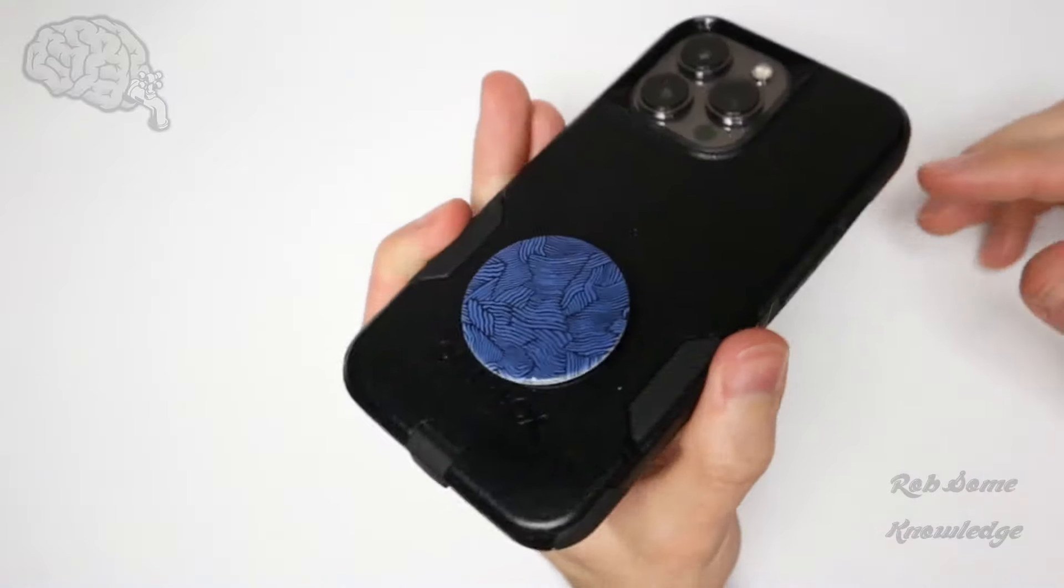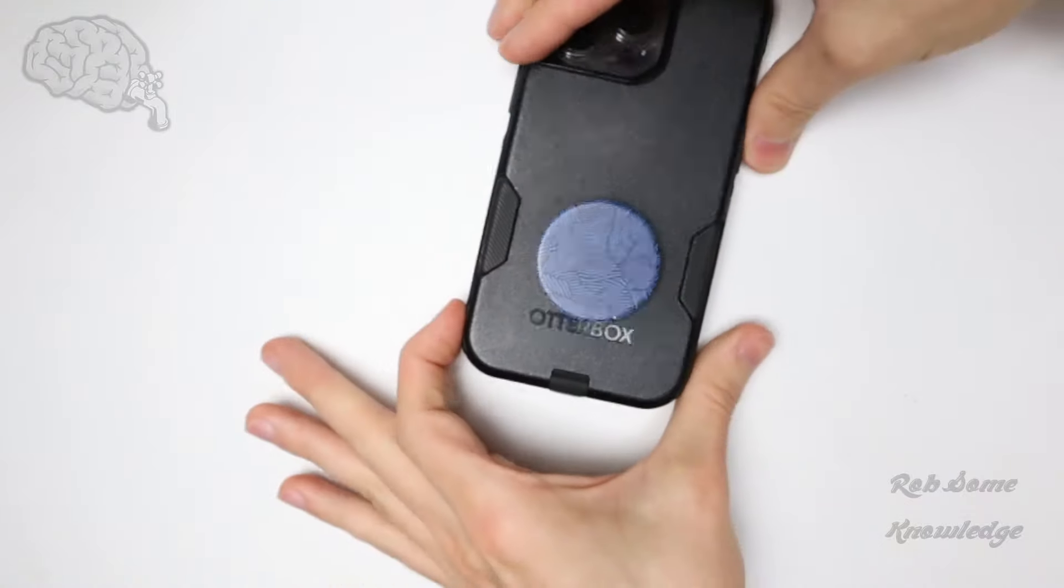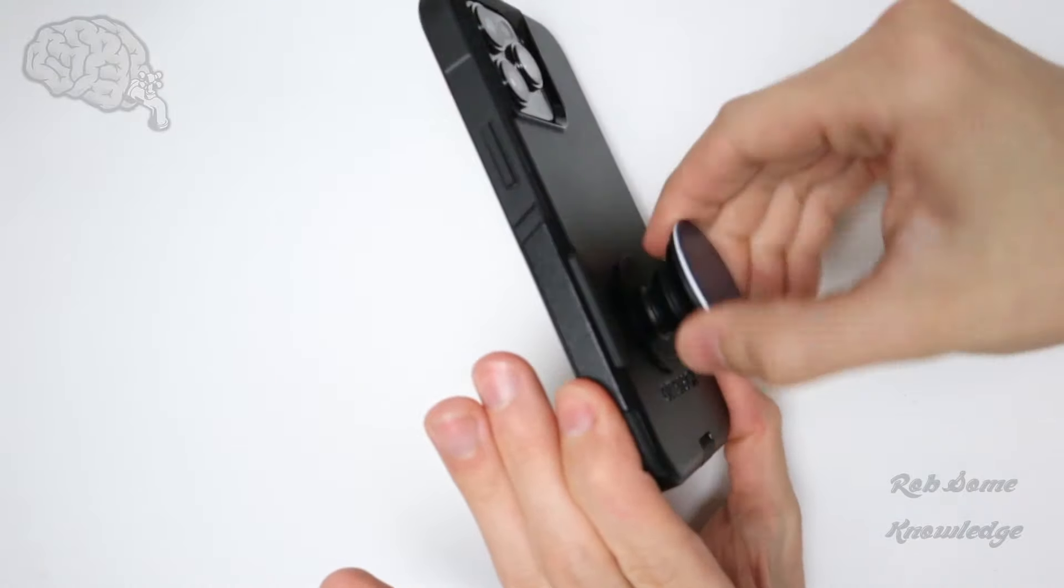So you have to collapse your PopSocket and then you're going to press down and turn it 90 degrees. And you can't do it while it's expanded. That doesn't work.